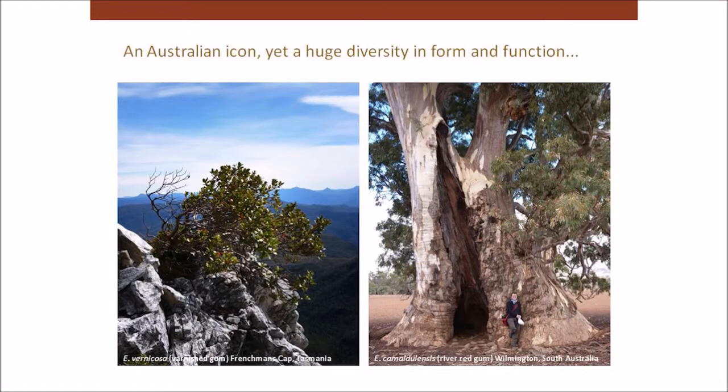Over half of all the eucalyptus species are actually the mallee species — the multi-stemmed ones that probably don't grow much bigger than maybe six or eight metres tall. So generally when people hear of a gum tree, they think of great big red gums. But one of the things I'm trying to do is get people more knowledgeable about the smaller growing species, because the vast majority of all eucalypt species are the multi-stemmed shrubby species.